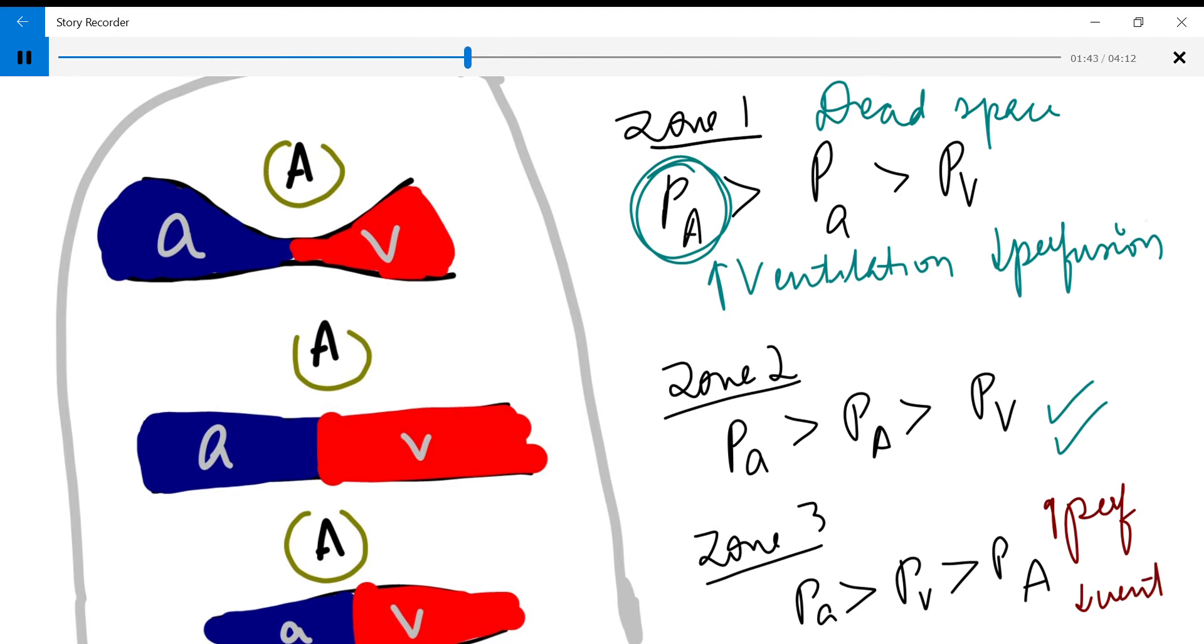In this zone we have what we call right-to-left shunt because some of the blood might escape the ventilation and some of the deoxygenated blood might go into the pulmonary venous system.